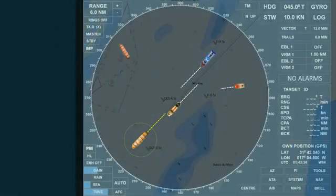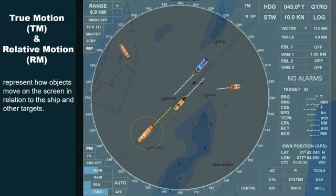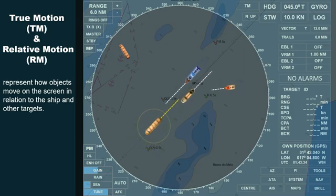In radar display, true motion and relative motion represent how objects move on the screen in relation to the ship and other targets.